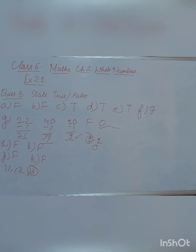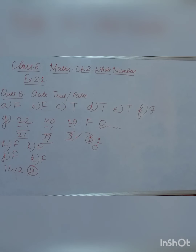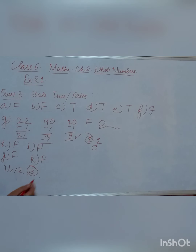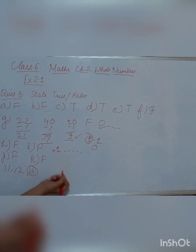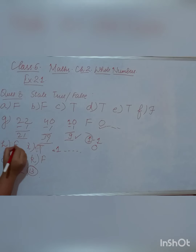Let me clarify the I part again: 'The natural number 1 has no predecessor.' Natural numbers start from 1. When we look at predecessors within natural numbers, 1 minus 1 gives 0, but 0 is not a natural number — it is a whole number. So within the set of natural numbers, 1 has no predecessor. Therefore this statement is true.